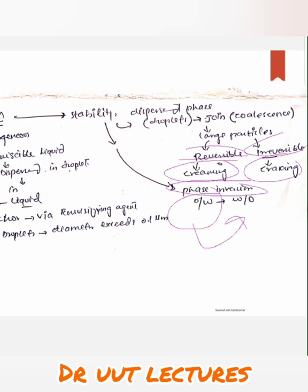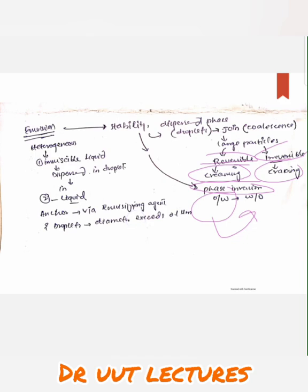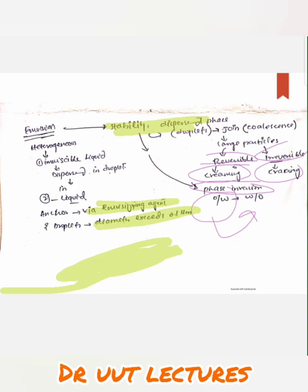One important point to remember is that these droplets should exceed a diameter of 0.1 micrometer — it should not be less than this, otherwise stability disorders can occur. Another important point is that the emulsifying agent should be chosen carefully to get the best type of emulsion, because the emulsifying agent is responsible for placing the droplets in specific positions. Without a proper emulsifying agent, the droplets will not be dispersed properly and will coalesce together, forming larger droplets.